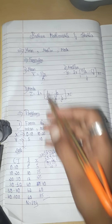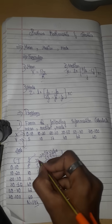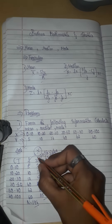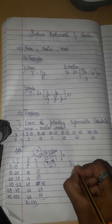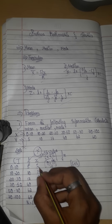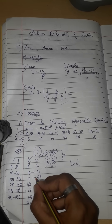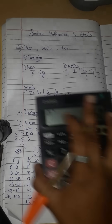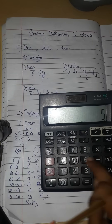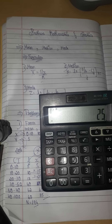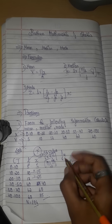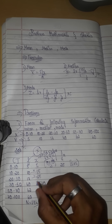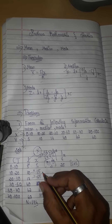Next we find fx. We multiply each frequency by its mid-value x. First: 5 into 5 gives 25. Next: 10 into 15, then 17 into 25, then 40 into 40. We multiply across the fx column to get each value. For example, 5 into 5 is 25 for the first fx value.